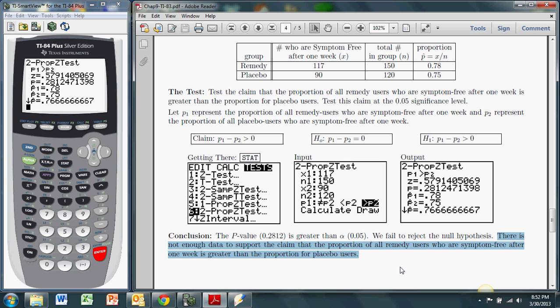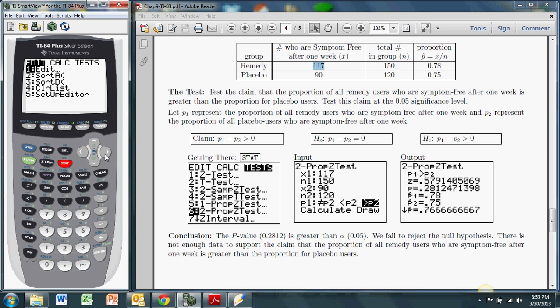The problem is sometimes you're only given these proportions, the sample proportions, and a sample size. So in order to use the TI, you really have to multiply your sample proportion by the sample size. And that will give you your x-values that you have to put in.